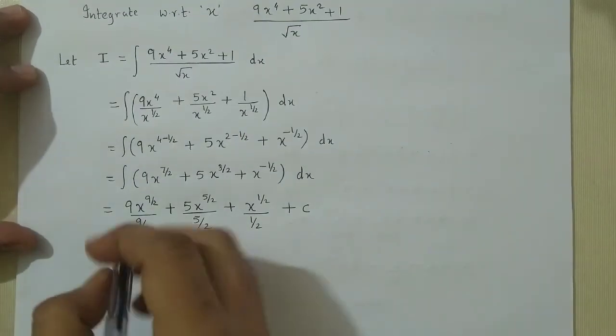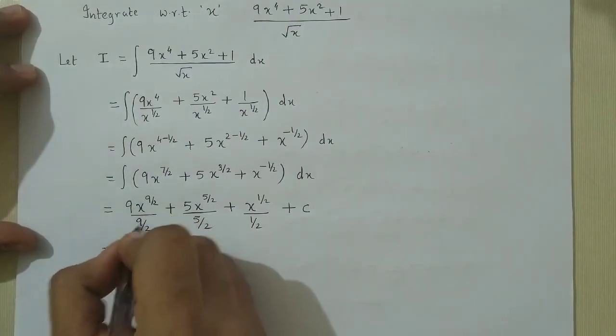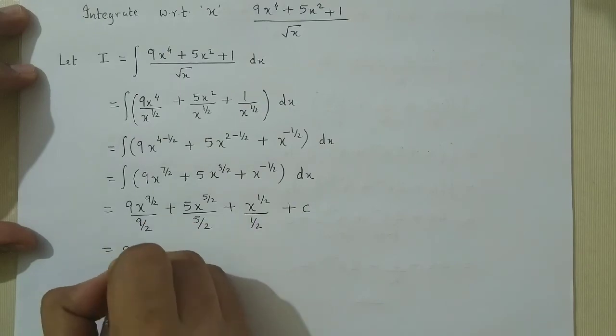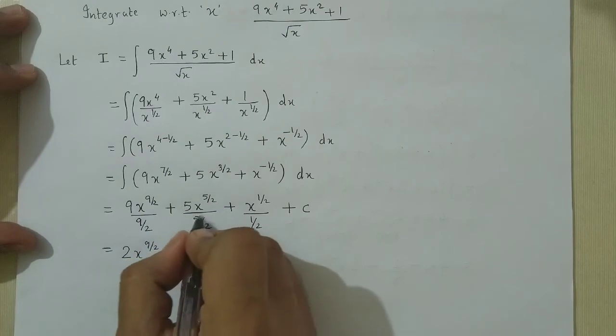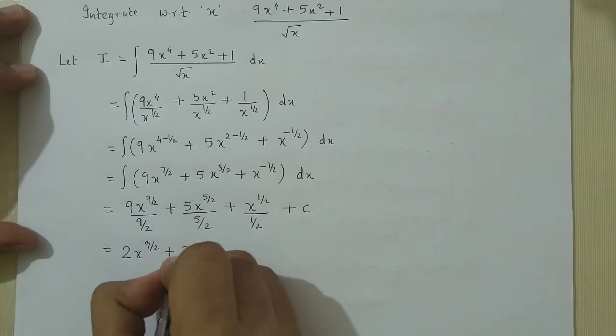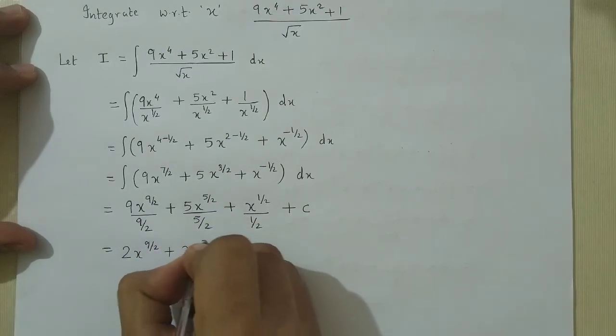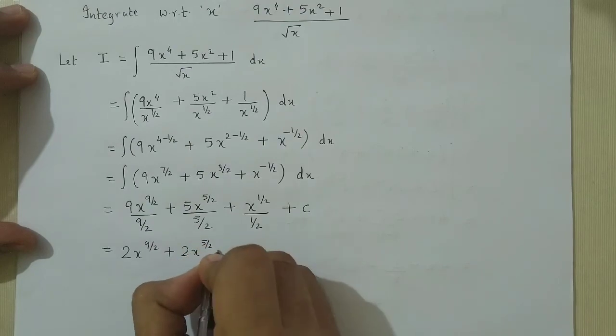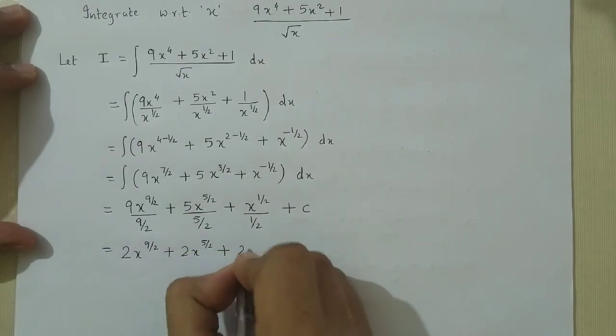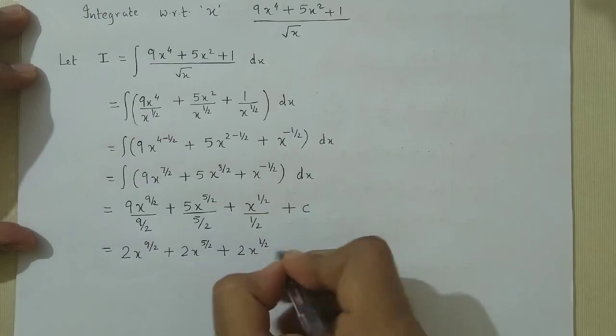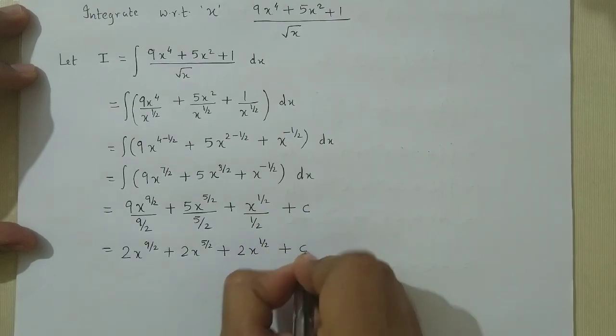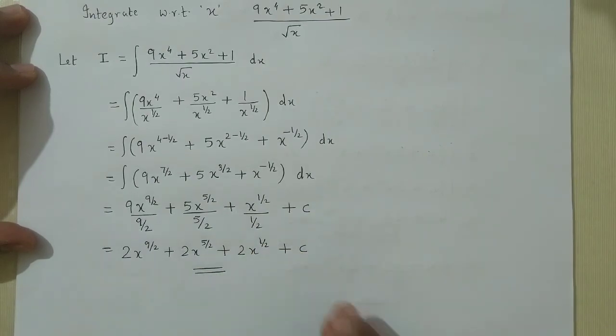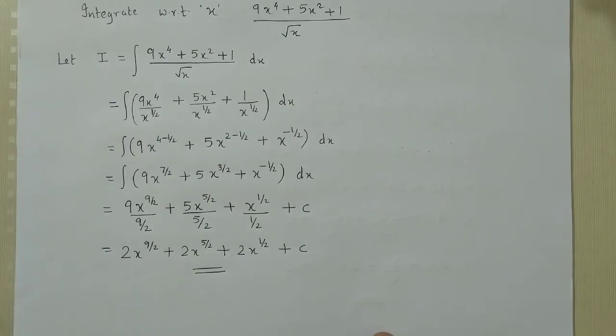Now if we simplify this, the coefficients reduce, and we get 2 times x raised to 9/2, plus 2 times x raised to 5/2, plus 2 times x raised to 1/2, plus c. So this is the required integral value.